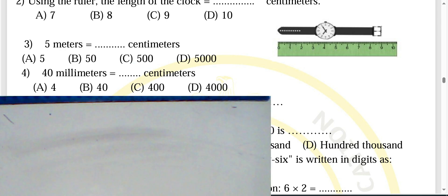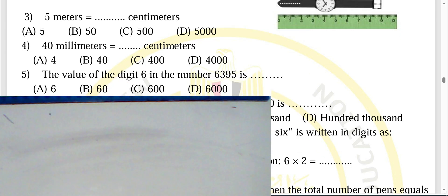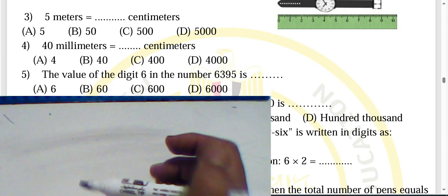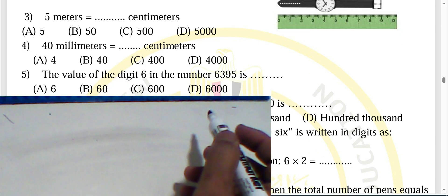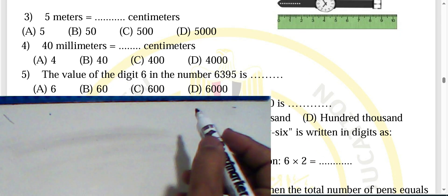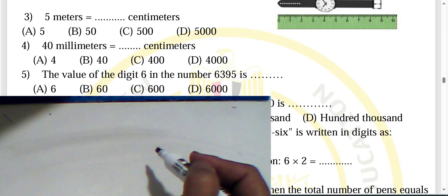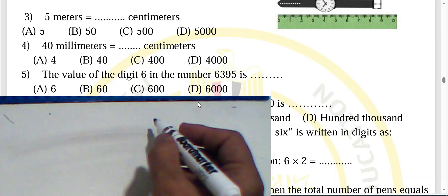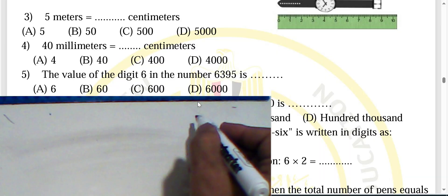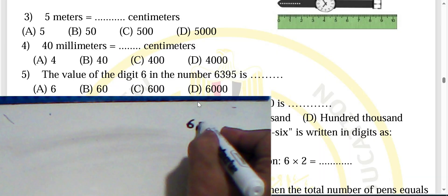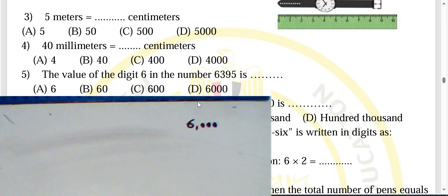Question five: the value of digit six in the number 6,395. The digit six lies in the thousands place, so its value is six thousand — choose letter D.